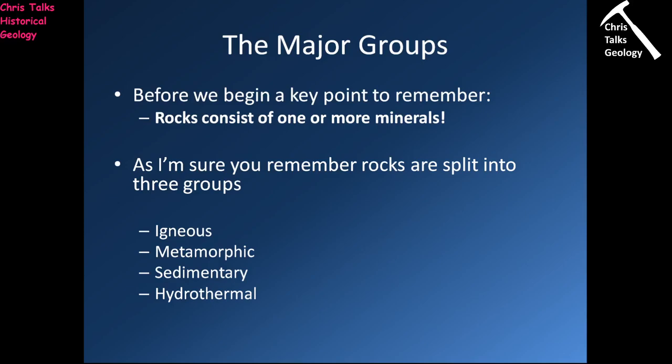Hydrothermal rocks are produced when hot water interacts with a rock, producing a new rock in the process. You can argue it's its own individual group — four types — or you could say that most hydrothermal processes are driven by igneous, metamorphic, or sedimentary processes, making them technically igneous hydrothermal, metamorphic hydrothermal, or sedimentary hydrothermal rocks. So depending on how you feel, there are either four or three different types of rock.